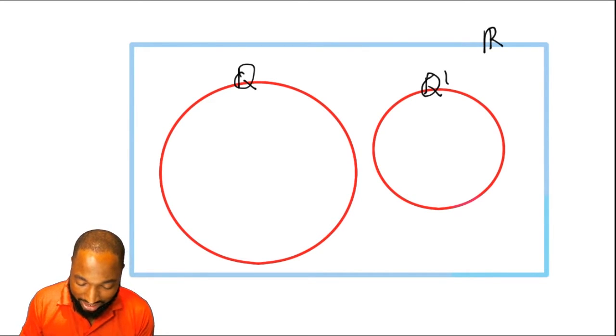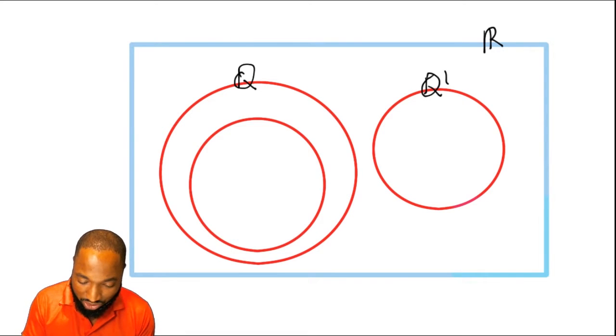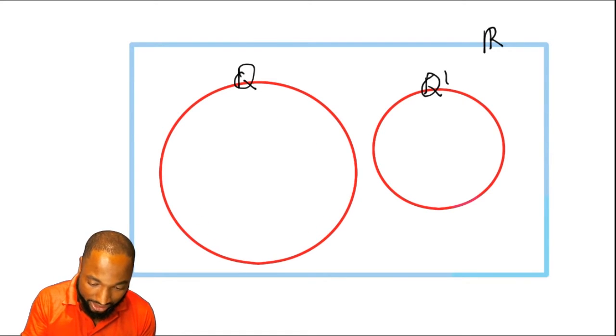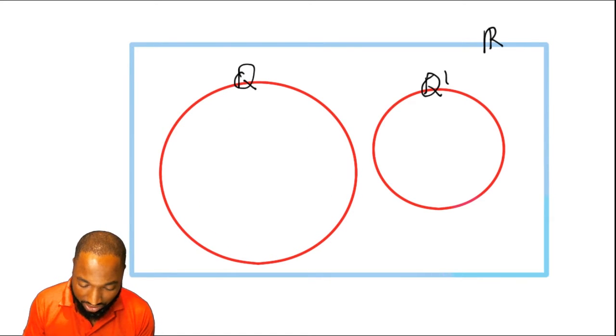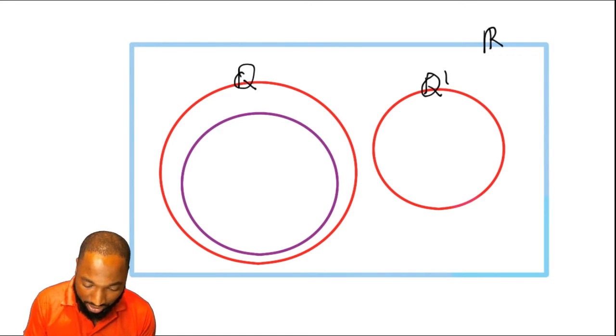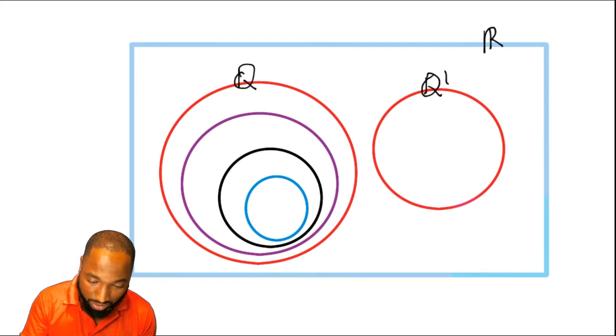So inside we're going to draw some more subsets. Let's make this one purple because we could. Let's try and make it into a circle. Let's make this one black because we have one more subset after the black. That's going to be the blue.